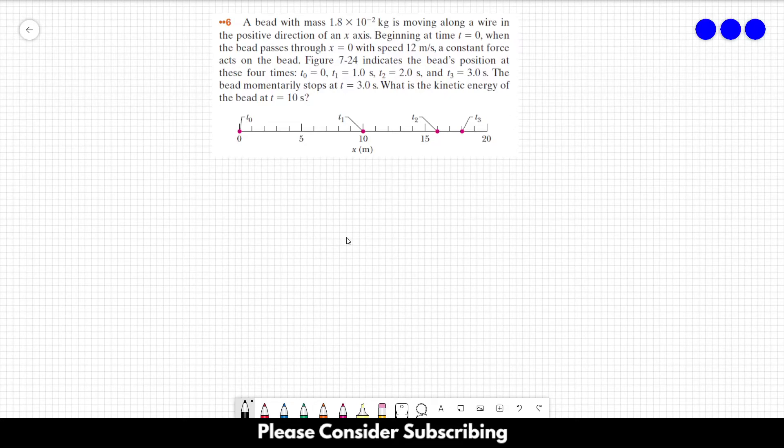Number 6: A bead with mass 1.8 times 10 to the minus 2 kilograms is moving along a wire in the positive direction of an x-axis. Beginning at time t equals 0, when the bead passes through x equals 0 with speed 12 meters per second,